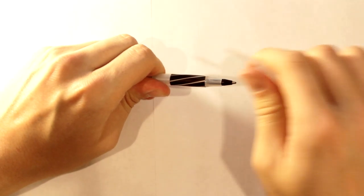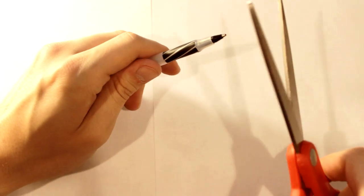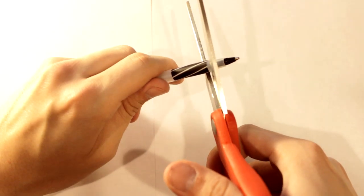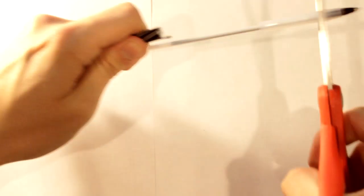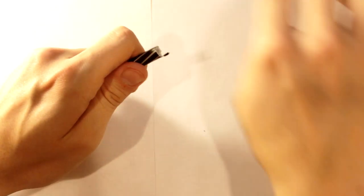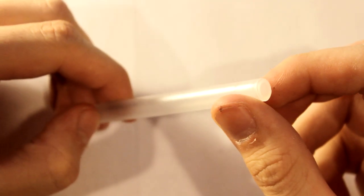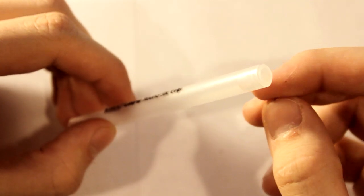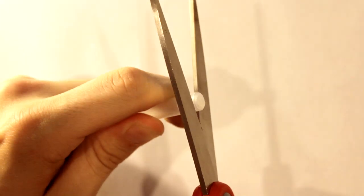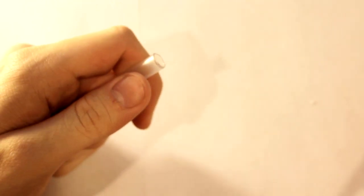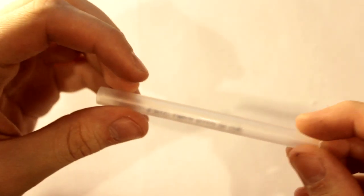First we're going to take apart our pen. On the side with the point, you should be able to remove the end by pulling it. I used the scissors as grip, then worked it off slowly. On the other end, there should be a small plug closing it off. Use your scissors to cut around the end and remove the small plastic piece. You should now have a plastic cylinder. Set this aside.